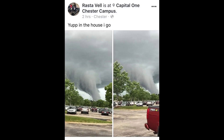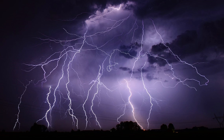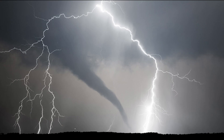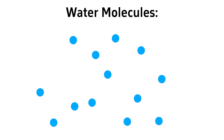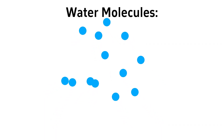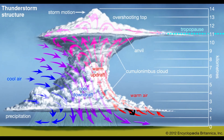Scud clouds aren't actually tornadoes, but people often mistake them for one because they resemble a funnel. The key difference is that scud clouds do not rotate. They are often associated with thunderstorms, which makes it easy to mistake them for a tornado. These clouds form as the warm updraft of a thunderstorm lifts relatively warm air near the surface, and the warm moist air condenses as it saturates during ascent and is pushed outward from the storm.